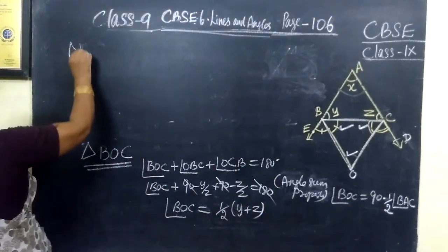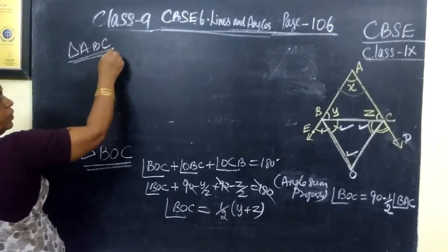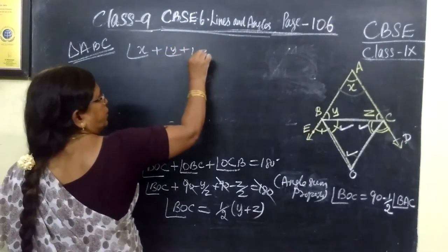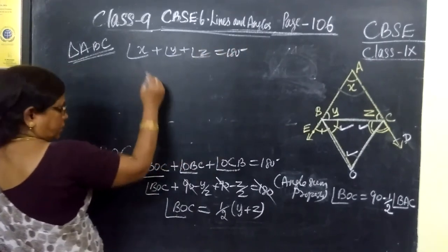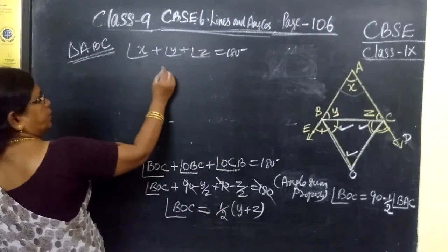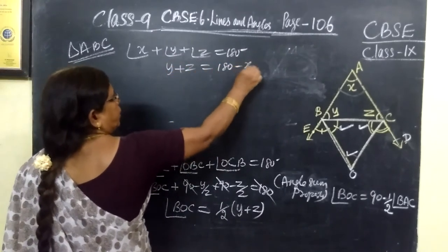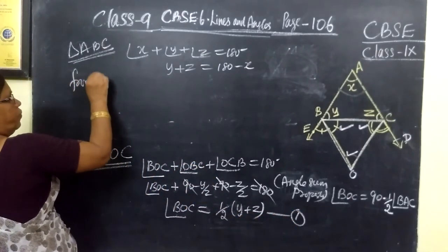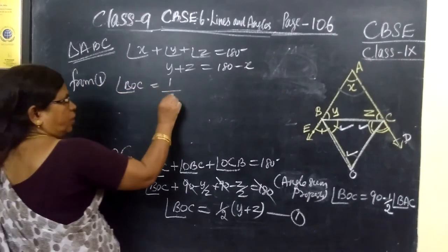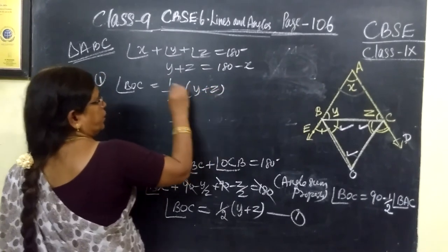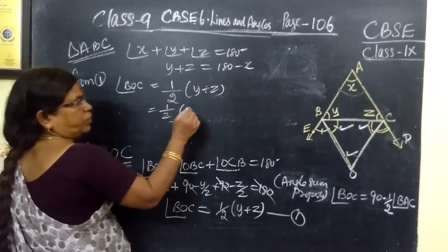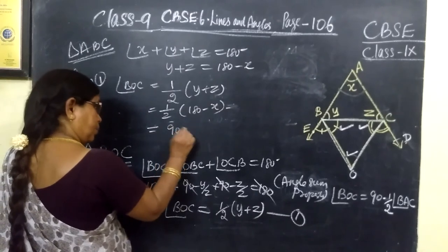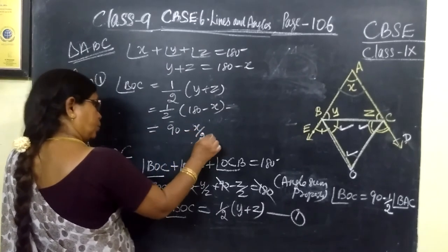And you consider another triangle, consider the triangle ABC. In this sum of the three angles 180 degree. That is X plus Y plus Z equal to 180 degree. Here Y plus Z we need. Therefore Y plus Z equal to 180 minus X. You substitute here, mark it as 1. So from 1, angle BOC equal to half of Y plus Z, equal to half of 180 minus X. So this is equal to 90 minus X by 2.